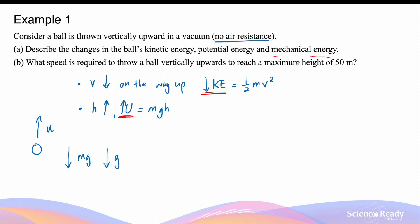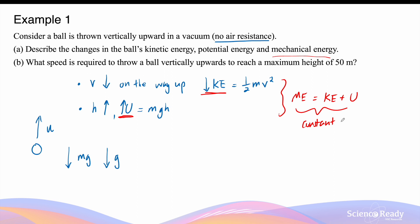What about its mechanical energy? Mechanical energy of an object refers to the sum of its kinetic energy and potential energy — in this case, its gravitational potential energy. In the absence of any air resistance or friction, the mechanical energy is always conserved. Which means when you calculate the mechanical energy, that is KE plus its gravitational potential energy, this should remain constant at all times, whether the ball is heading upwards or moving downwards.